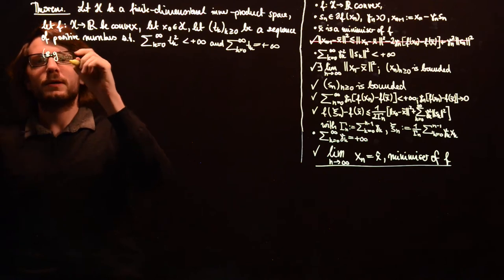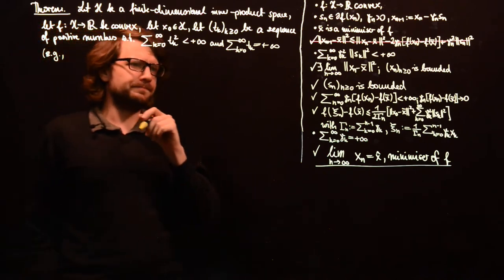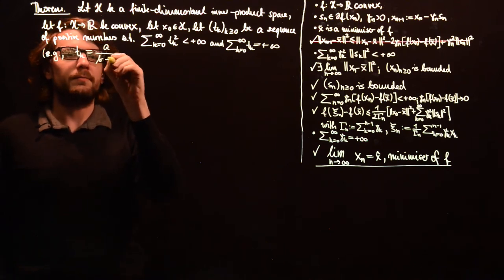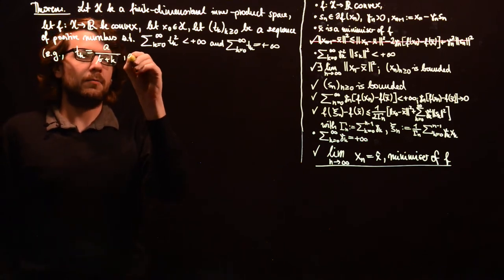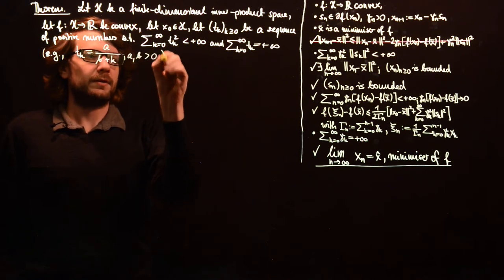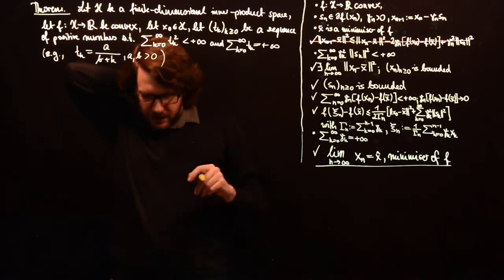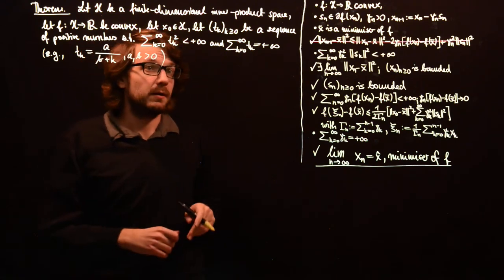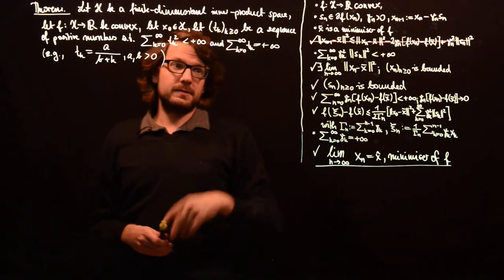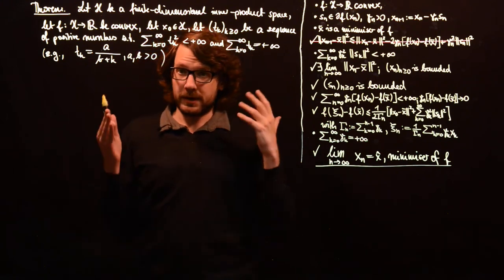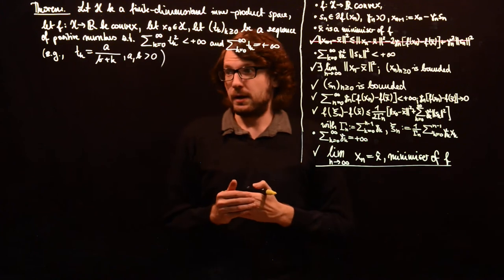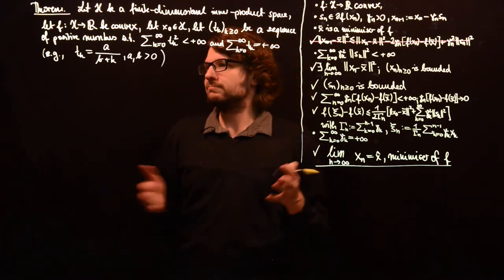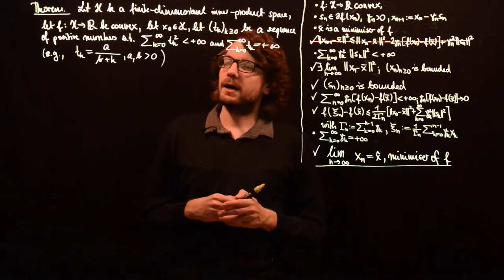For example, you can choose t_k equal to a over b plus k with a and b positive. For example, for a and b equal to 1, you know that this is the sequence 1 over k plus 1.